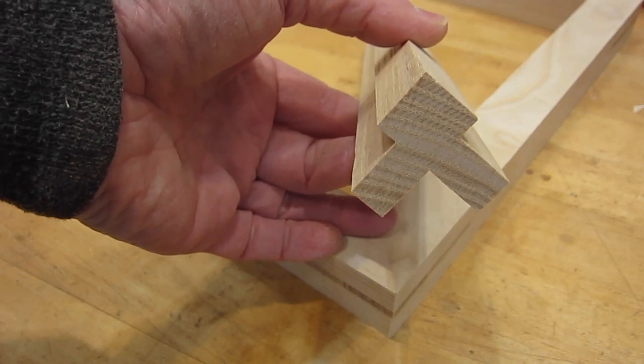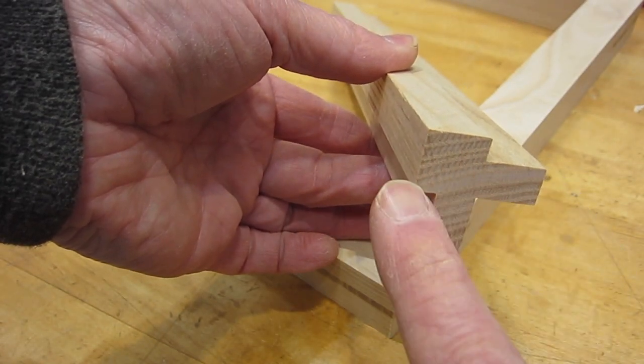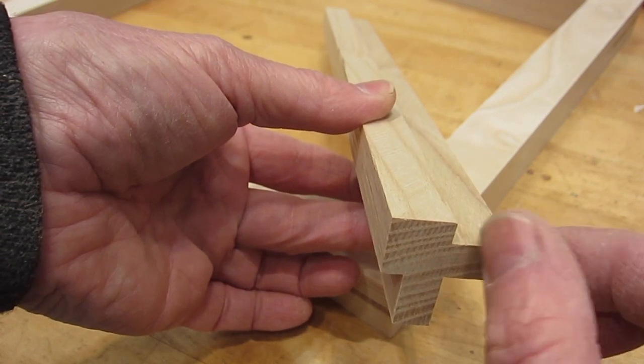The height of the blade on the table saw is the same for every cut, which is half the dimension. So this is one and a quarter inch and the blade was set five eighths of an inch high.